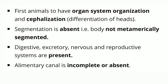These are the first animals to have organ system organization and cephalization, that is differentiation of the head. Comparing: Porifera has cellular level of organization, Cnidaria has tissue level of organization, and Platyhelminthes has organ system organization.